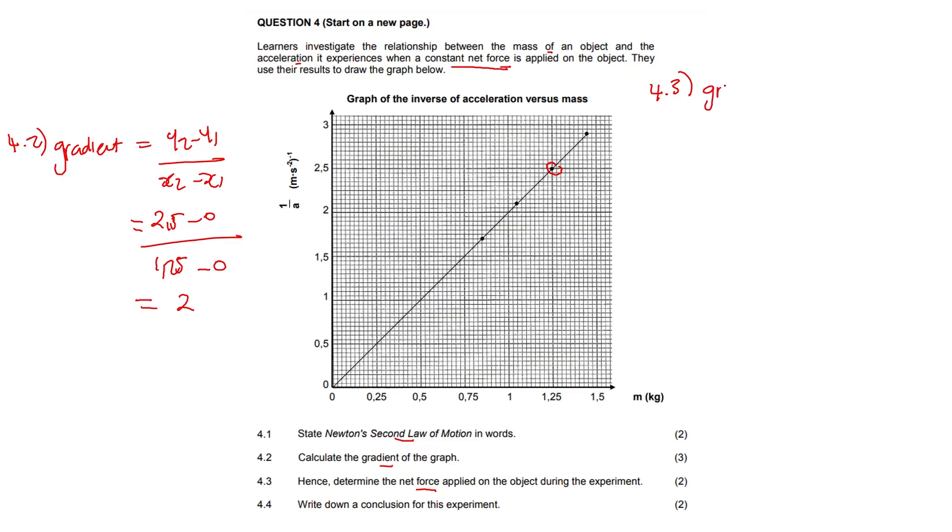So we know that our gradient is equal to 1 over mass times acceleration. And what do we know about mass times acceleration? That is F net, that is our net force. So if our gradient is 2, our net force will be a half, or you can write 0.5 Newtons.